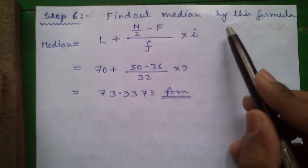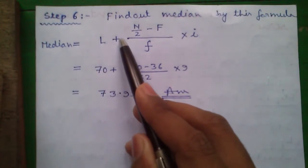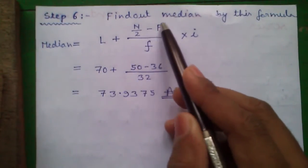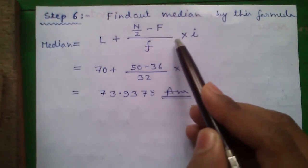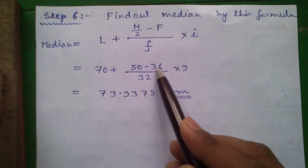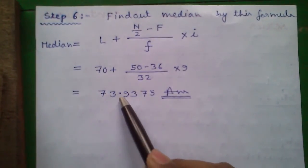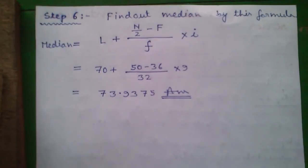Step 6: Find out median by this formula. Median equals to L plus n by 2 minus capital F divided by small f into i, which is equal to 70 plus 50 minus 36 by 32 into 9, which is equal to 73.93. So this is our answer.